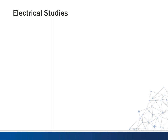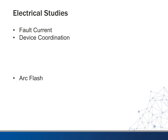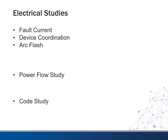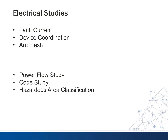So what are some of the electrical studies that we might run into? We have what's known as a fault current study. We can have a device coordination study and an arc flash study. These are the ones that are pretty typical. In addition to these, we can have a power flow study, a code study, hazardous area classification study, life safety study, and lighting studies.